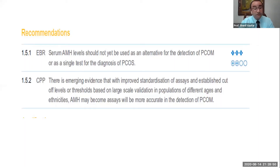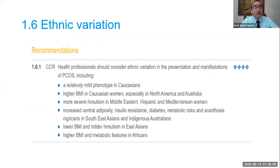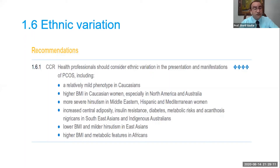You can do AMH to plan your treatment and to plan your dosage — it's very important not to diagnose, but to plan treatment, especially for cases prepared for ART. Regarding ethnic variation: Caucasians have a very mild phenotype with higher BMI. In the Middle East there is severe hirsutism, and in East Asia there is high diabetes prevalence. If you work in an area with different populations, like in the Gulf, you should know all these variations.